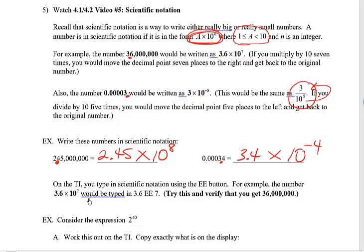So times 10 to the negative 4. I want to show you then how you can deal with scientific notation on your calculator. It's kind of funny looking on the TI. You have to use this button called EE. So let me take you there and show you what it looks like.